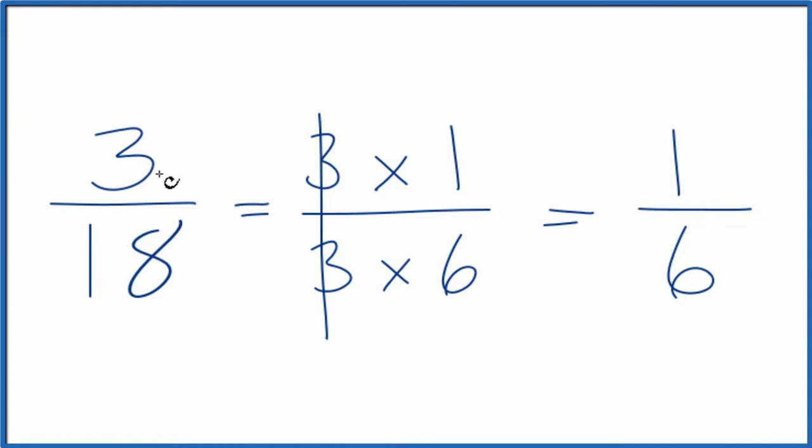So we've simplified the fraction 3/18 down to 1/6, and we found the greatest common factor, that was 3.